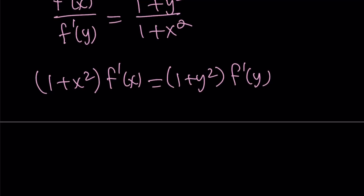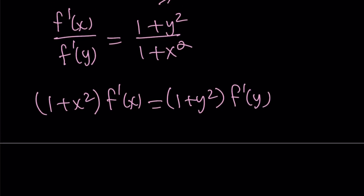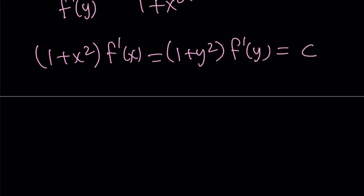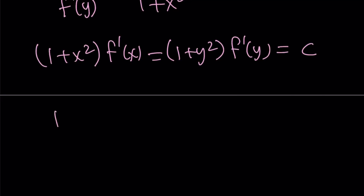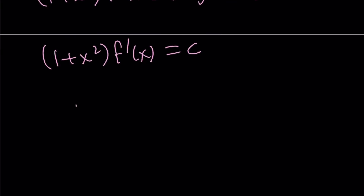We obviously have some sort of symmetry here, and this is really cool. What is this equation supposed to mean? We're trying to solve for f, and f of x can be expressed as a function of x, while f of y can be expressed in terms of y. But we have a function of x on one side and a function of y on the other side — it's only possible if both of these are equal to a constant. Therefore, we get that one plus x squared times f prime of x equals a constant.